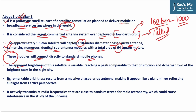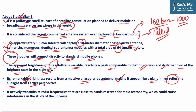However, the apparent brightness of this satellite is variable, reaching a peak comparable to that of Procyon and Archonel, two of the brightest stars in the night sky. This remarkable brightness results from its massive phased array antenna, making it appear like a giant mirror reflecting sunlight from Earth's perspective. The BlueWalker 3 satellite transmits at radio frequencies close to bands reserved for radio astronomy, which could cause interference in the study of the universe — a matter of concern.